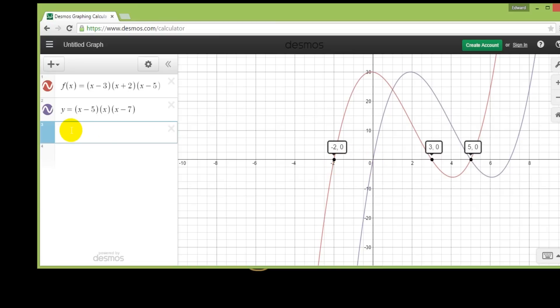Now a quicker way of writing that is instead of writing it out, I can just write y equals f of x minus 2. And that just creates the new line based on what f of x was before. So that's a shortcut way of doing it.